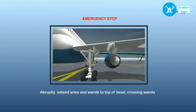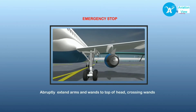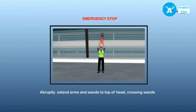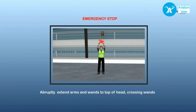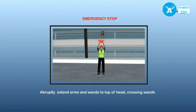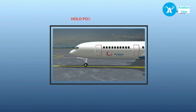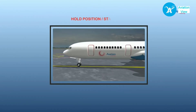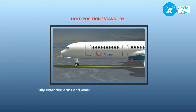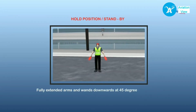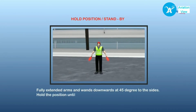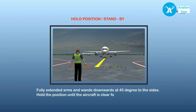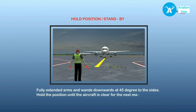If the marshaller needs to bring the aircraft to an emergency stop — for example, if he has seen some obstruction — he abruptly brings his wands up and crosses them above his head. When the marshaller wants the aircraft to hold position, he extends his arms and wands downwards at 45 degrees to the sides and remains that way until the aircraft is clear for the next maneuver.